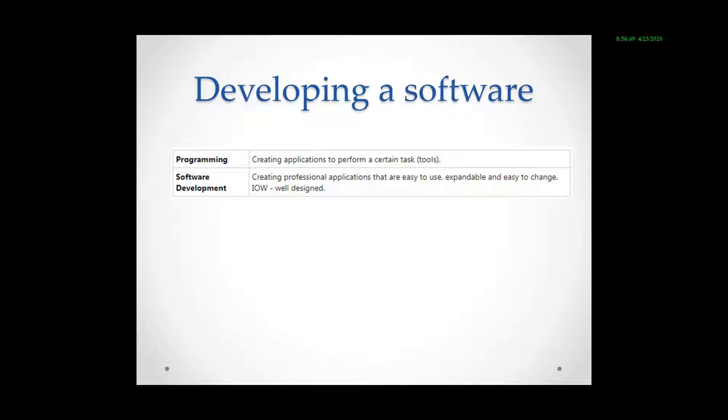Programming is a part of software development. A computer program can be a software when it passes all the steps starting from defining a task, testing and software support. So today we will see how to write a program for the given algorithm.